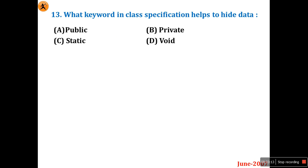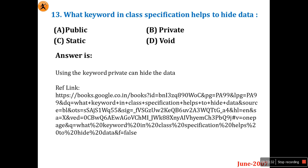Question 13: What keyword in a class specification helps to hide data? Options are public, private, static, and wide. Static and wide are irrelevant. Public data can be accessed anywhere, so it is not the answer. The private specifier is used to hide data. For more detail go through the linked Google Drive book. Option B is the right answer.